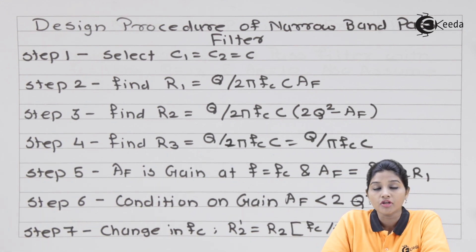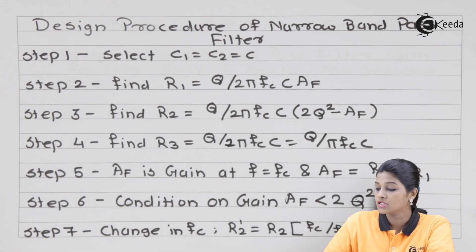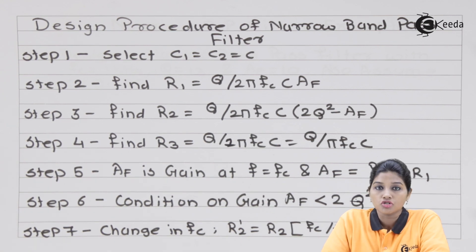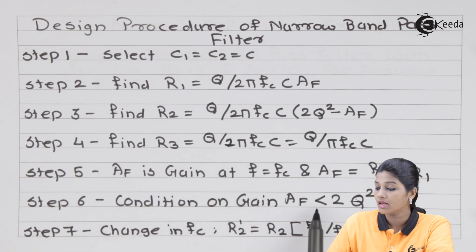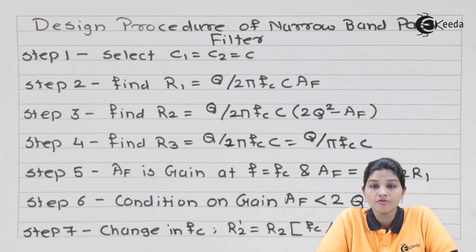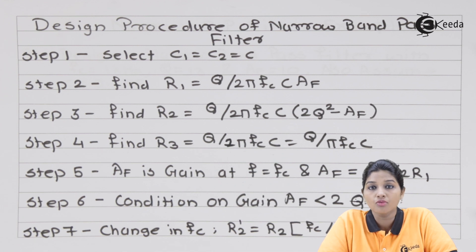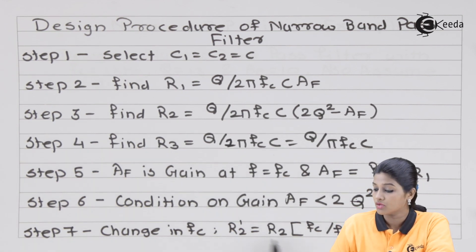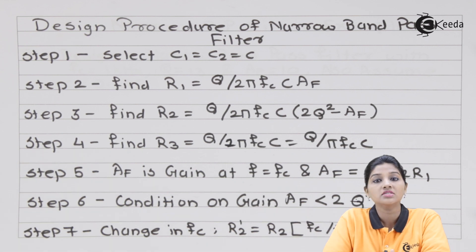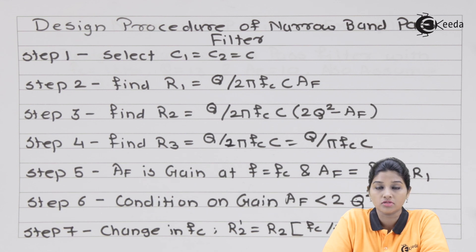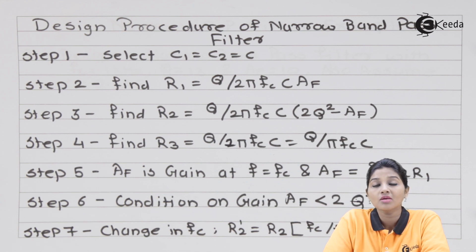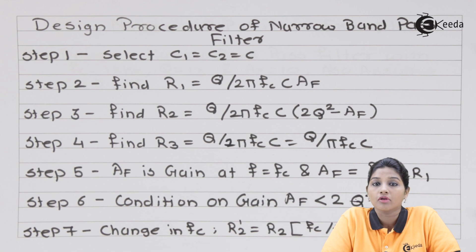Step five: the gain at the center frequency fc is defined as Af = R3 / (2 × R1). Step six: the gain condition — the gain of the narrow band pass filter must be less than 2Q². If we need to change the center frequency without changing the gain or bandwidth, we only change R2. The new value is R2' = R2 × (fc / fc')², where fc' is the new center frequency and fc is the old one.